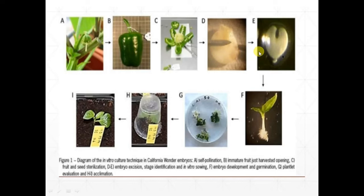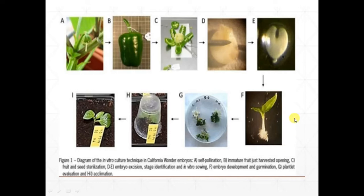Different stages of embryo development are identified. After in vitro sowing, embryo development and germination occur. After embryo excision, the embryo develops and germinates, followed by plantlet evaluation. After culturing, plants are evaluated and ready for acclimatization. Plantlets are isolated into culture plates and after culturing, the plantlets are ready for acclimatization.